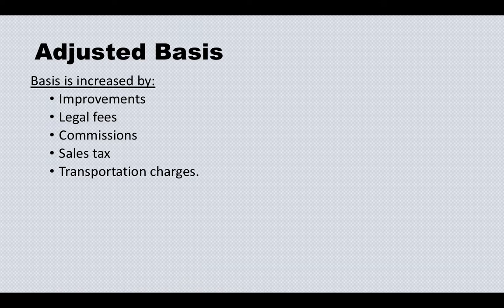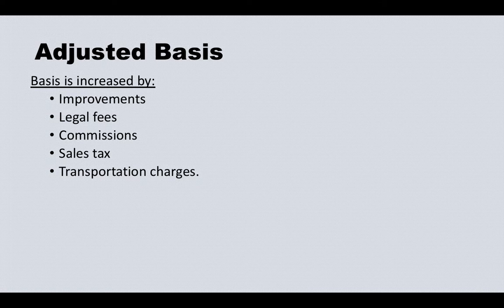Basis is increased by improvements, legal fees, commissions, sales tax, and transportation charges. If you have your house, any additional improvements like a new roof or fence—keep all the receipts. These add to the basis and increase it in the future when you sell, which reduces your capital gains tax.